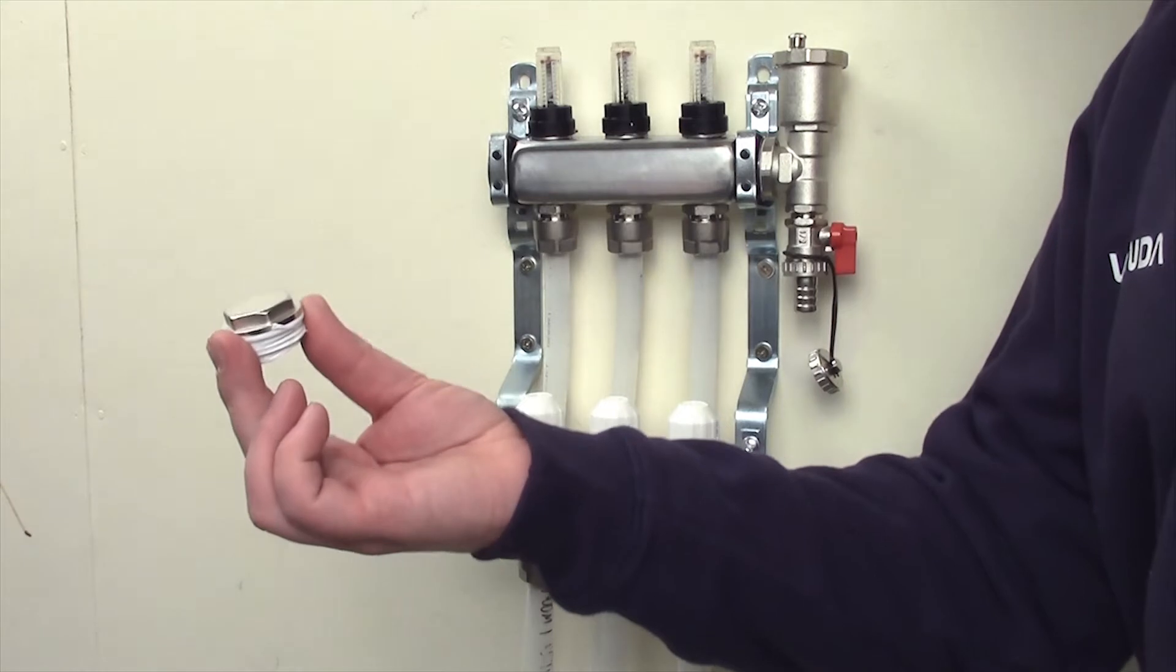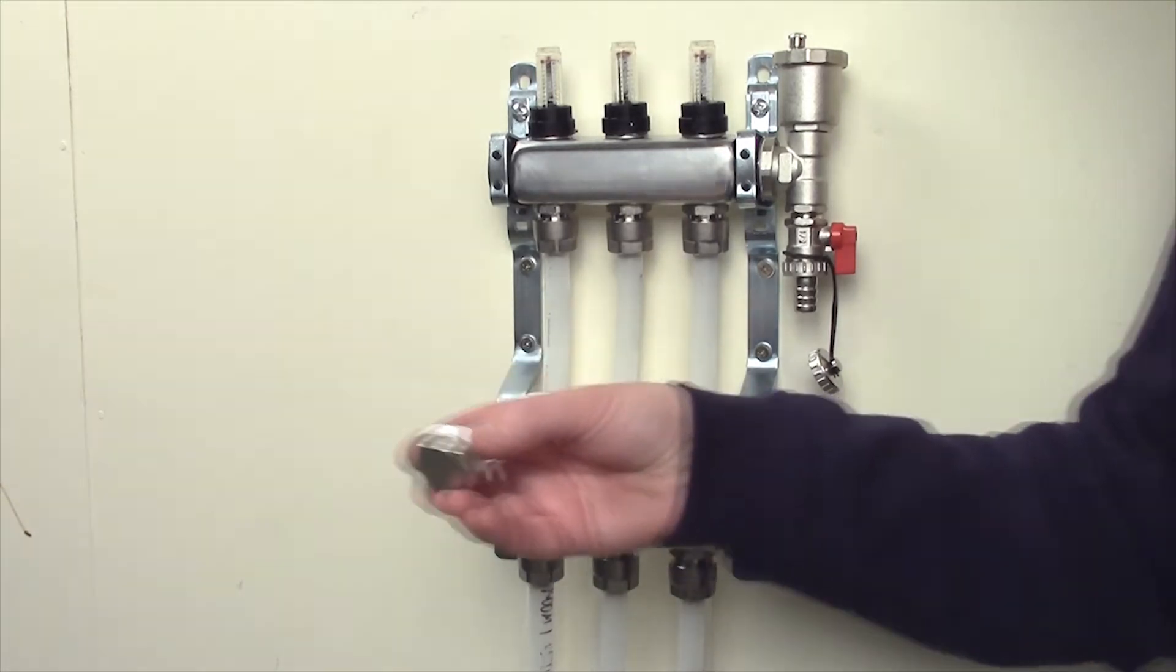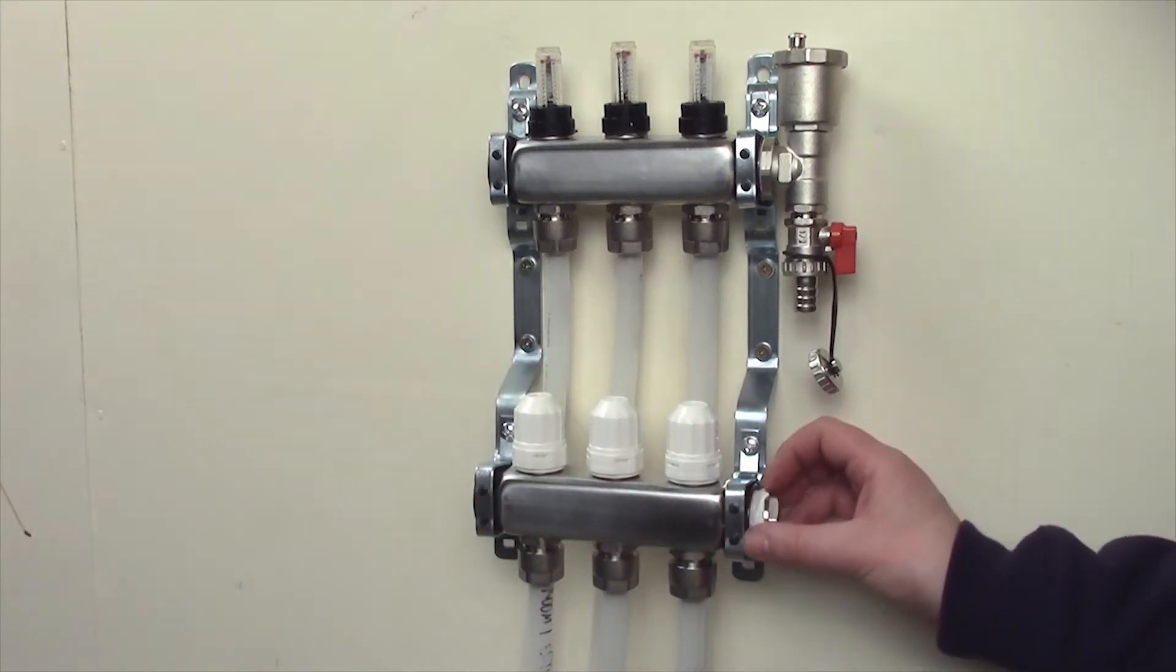Next, fit the one-inch male blank to the bottom right of the return bar, again using PTFE tape.